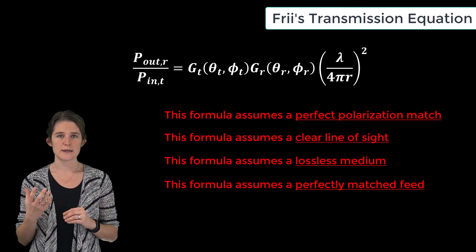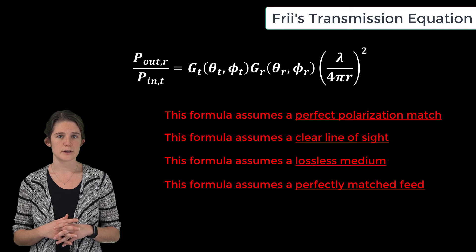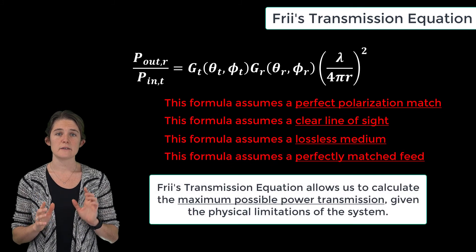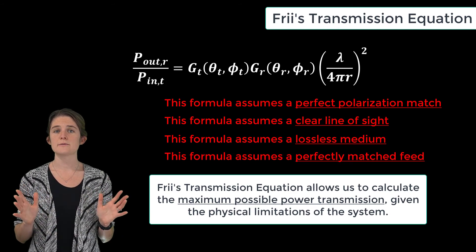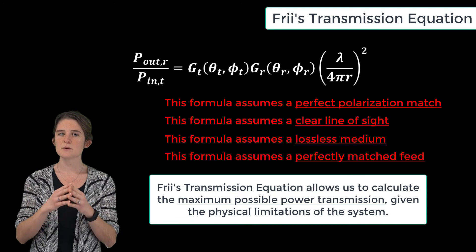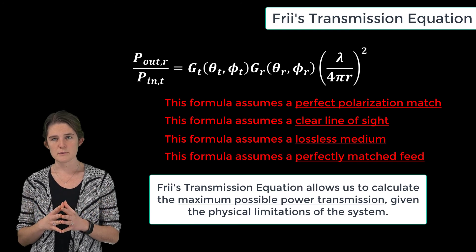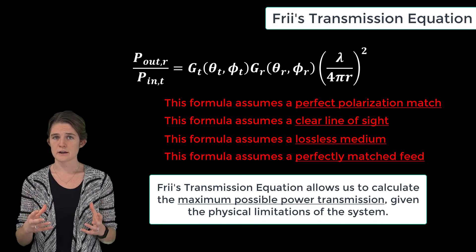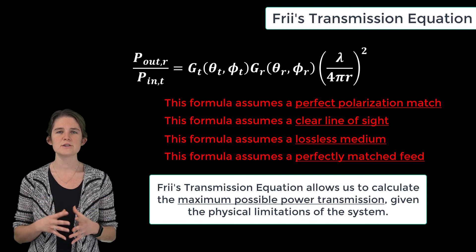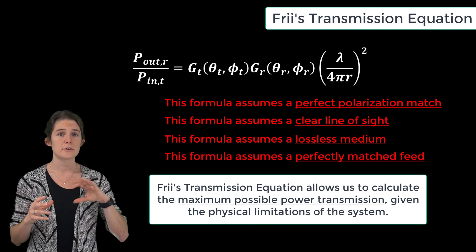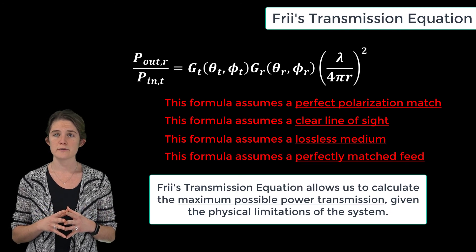It is important to note that all these assumptions are best-case assumptions — reality is likely to result in less transmission than the formula would lead us to believe. However, this allows us to calculate the best-case scenario given the physical limitations of the system. Most of these factors, such as polarization and feed matching, are things that engineers can control. So if we measure the transmission between two antennas and the received power is significantly lower than that predicted by the Friis transmission formula, we should probably spend some time improving the design in those areas.